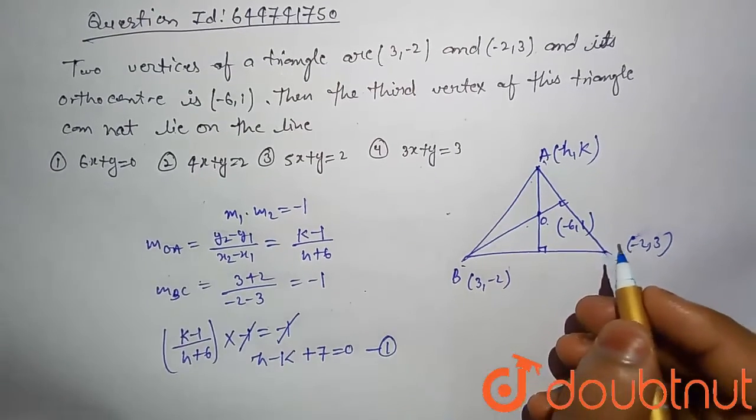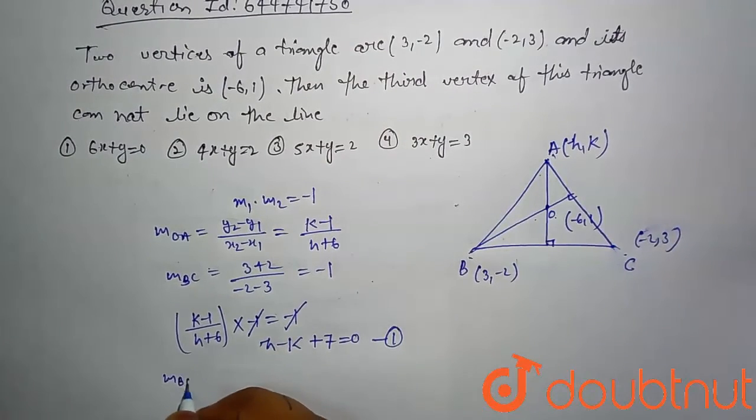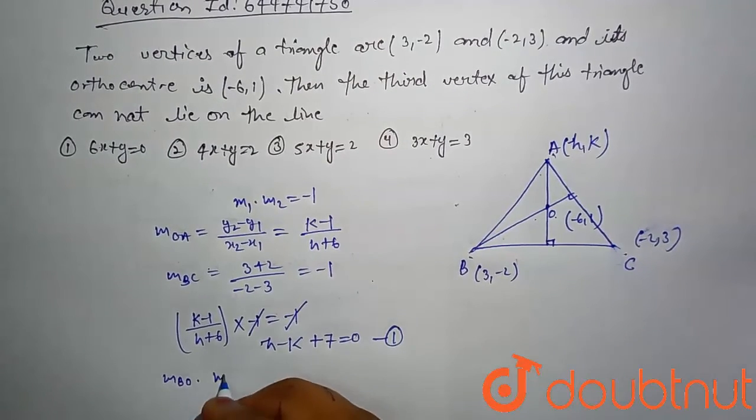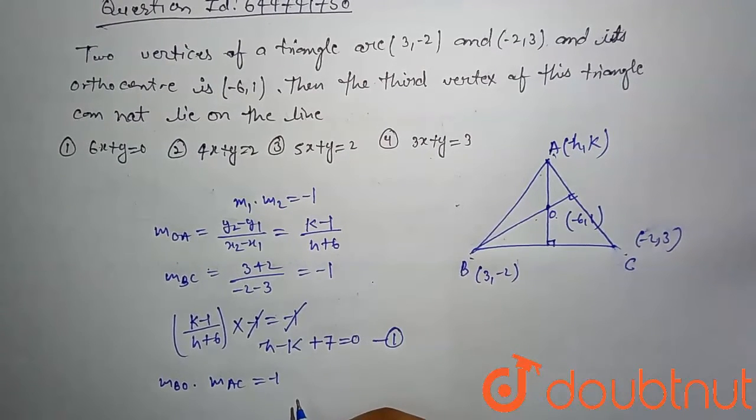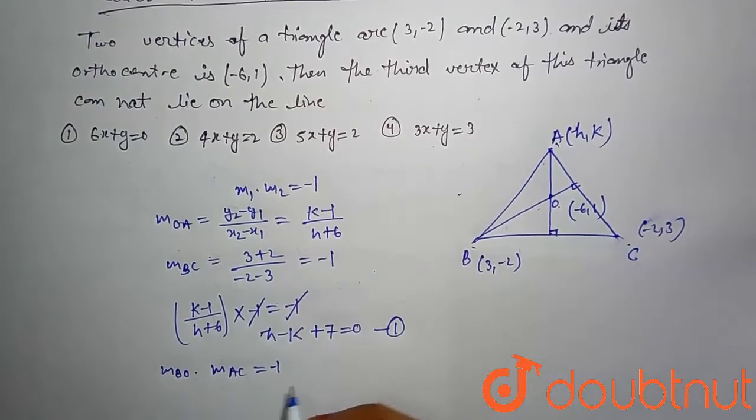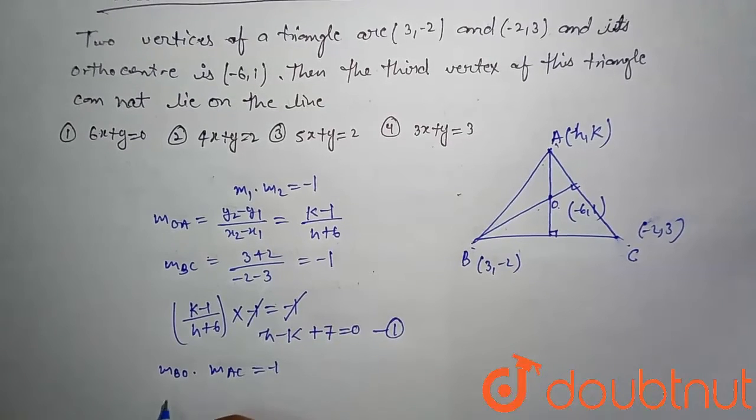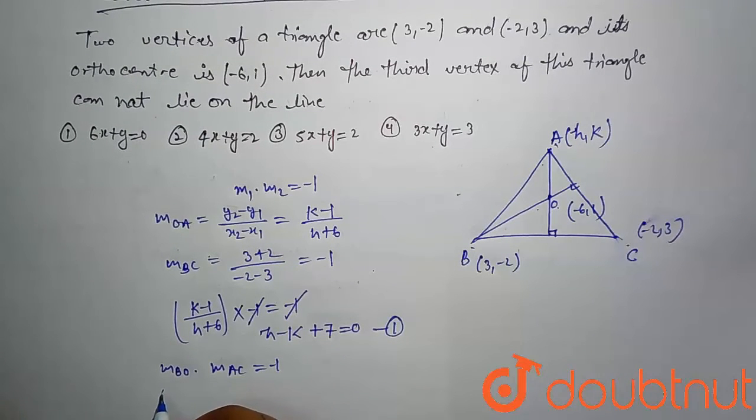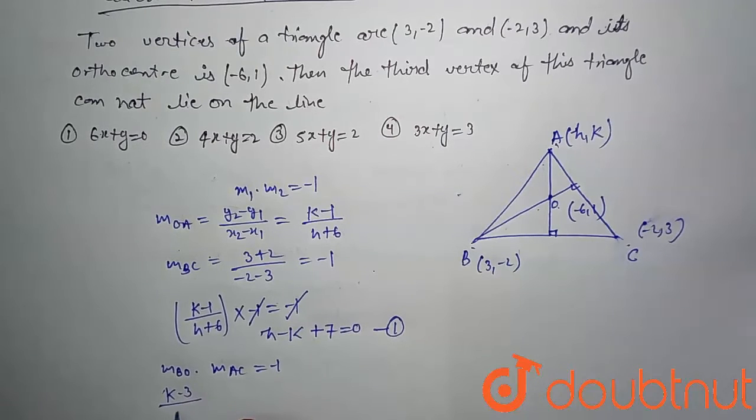Let's compute this. mBO · mAC = -1. That implies mBO which is (k - 3) divided by (h + 2) into mAC...